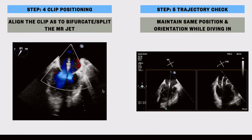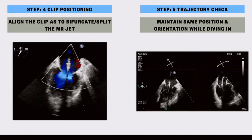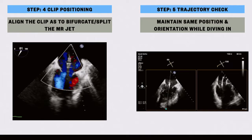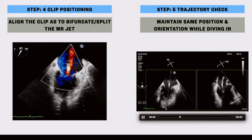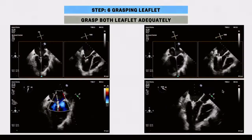Can we do MitraClip without 3D TEE? No — unless someone is a super expert using transgastric views. The 3D en-face view of the mitral valve is important to align the clip and assess perpendicularity. For clip positioning, there are three views: the bicommissural view to check if the clip is bisecting the jet, the LVOT view, and the 3D en-face view where you look at the trajectory to the apex. If it is bisecting the regurgitation jet, you are in the right plane.